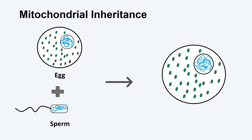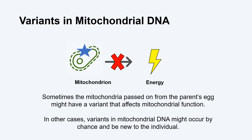First, we will talk more about how genetic variants in our mitochondrial DNA can cause mitochondrial disorders. During fertilization, an egg and a sperm cell come together. The egg cell is much larger than the sperm and carries mitochondria. Both the sperm and the egg carry nuclear DNA. Sometimes the mitochondria passed from the parent in their egg cell might have a variant that affects mitochondrial function. In other cases, variants in mitochondrial DNA might occur by chance and be new to the individual.